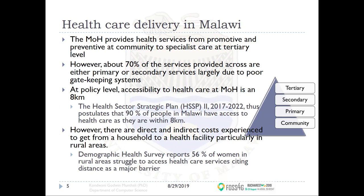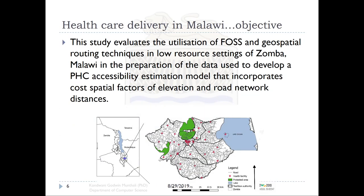We are saying this may not necessarily be true. There are direct and indirect costs for people to access health facilities, particularly in rural areas. The Demographic Health Survey reports that about 50% of women struggle to access healthcare, and most cite distance as a major barrier. The study area is a district in the southern part of Malawi, bordered by Tanzania, Zambia, and Mozambique.